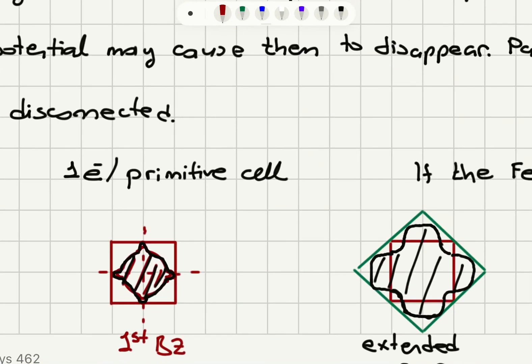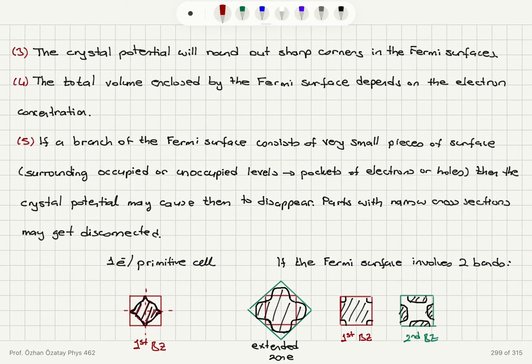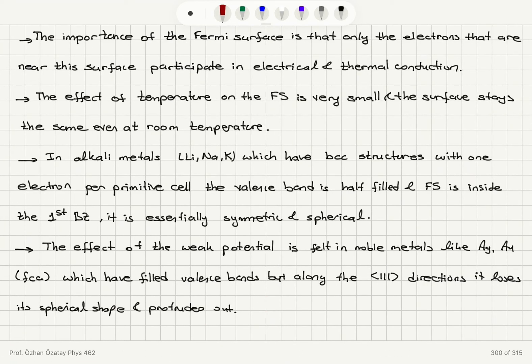That's what we see here. You can see it's essentially spherical and symmetric, but there is a small modification at the boundaries. The effect of the weak potential is felt in noble metals like silver and gold with face-centered cubic structure, which have filled valence bands, but along the 111 directions it loses its spherical shape and protrudes out.